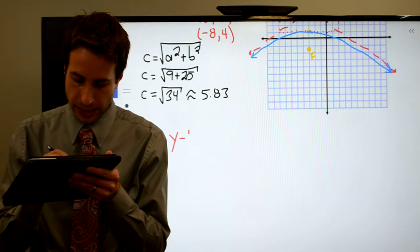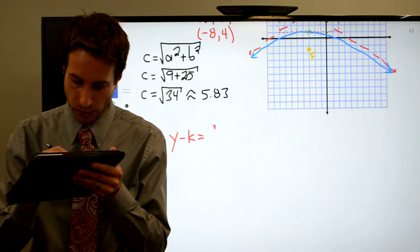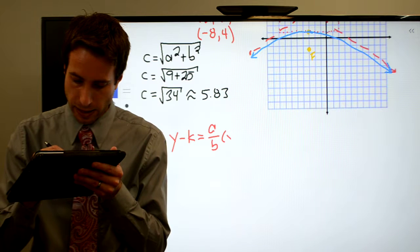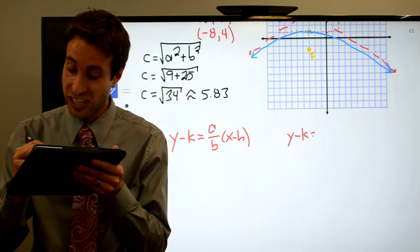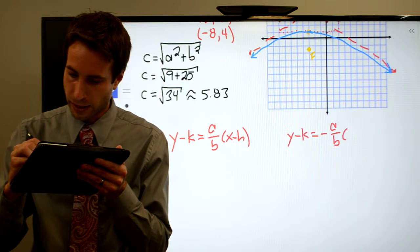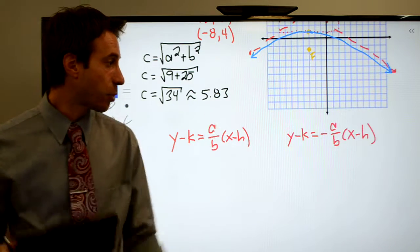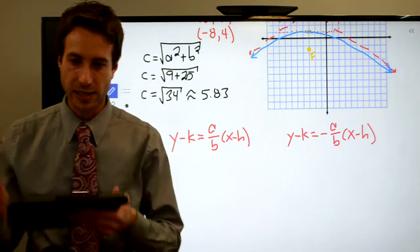y minus k is equal to a over b this time. So a over b, x minus h, and y minus k. And you need the negative one. So minus a over b, x minus h. At this point guys, just plug everything in. You know k, you know h, you know a, you know b. Plug all that stuff in.